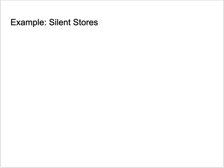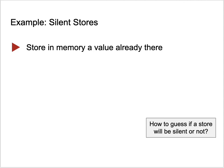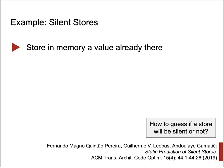Let me show you an example: the static prediction of silent stores. A silent store is a store operation that deposits in memory a value that was already there. How would you guess if a store is likely to be silent or not? This is a regression problem — we want to estimate the probability that a store is silent, since it can be silent sometimes but not always. You can find more about this approach in the corresponding paper.